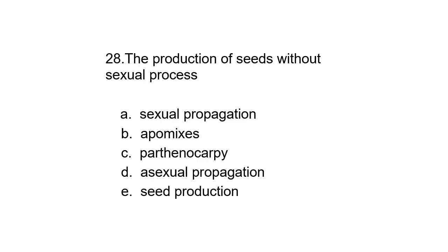Number 28: The production of seeds without a sexual process — a) asexual propagation, b) apomixis, c) parthenocarpy, d) asexual propagation, or e) seed production.